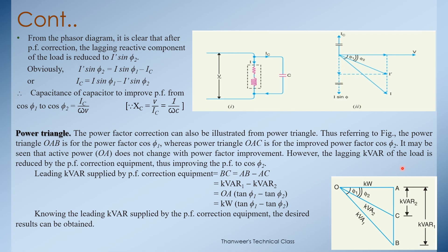The lagging kVAR of the load is reduced by the leading kVAR supplied by the power factor correction equipment. The leading kVAR supplied equals kVAR1 minus kVAR2, where kVAR1 = kW × tan(phi-1) and kVAR2 = kW × tan(phi-2).